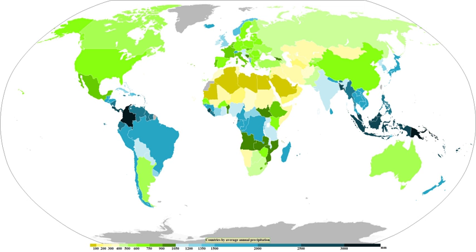The Köppen classification depends on average monthly values of temperature and precipitation. The most commonly used form has five primary types labeled A through E: A – tropical, B – dry, C – mild mid-latitude, D – cold mid-latitude, and E – polar. The five primary classifications can be further divided into secondary classifications such as rain forest, monsoon, tropical savanna, humid subtropical, humid continental, oceanic climate, Mediterranean climate, steppe, subarctic climate, tundra, polar ice cap, and desert.